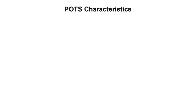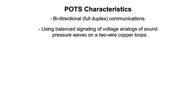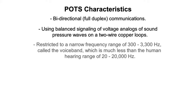POTS characteristics include bidirectional communications using balanced signaling of voltage analogs of sound pressure waves on a two-wire copper loop, restricted to a narrow frequency range of 300 to 3,300 Hz, called the voice band, which is much less than the human hearing range of 20 to 20,000 Hz.